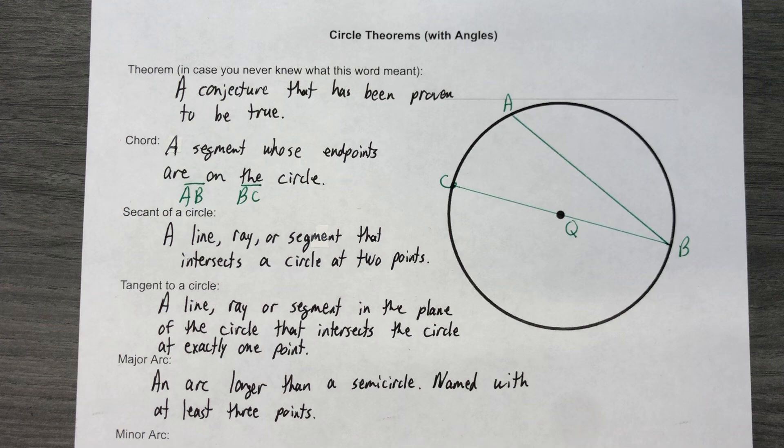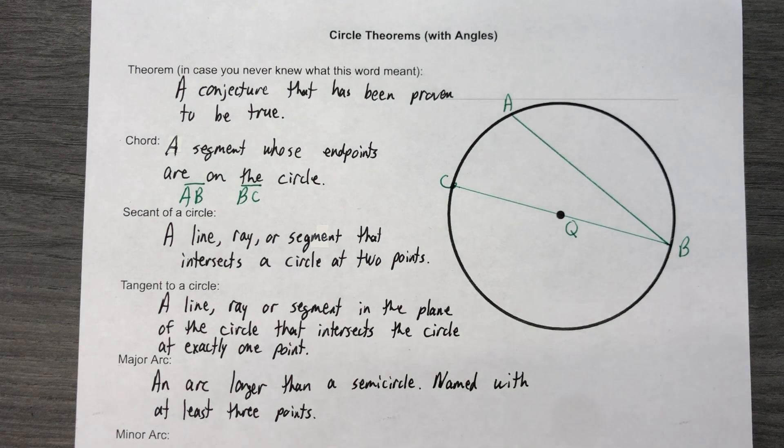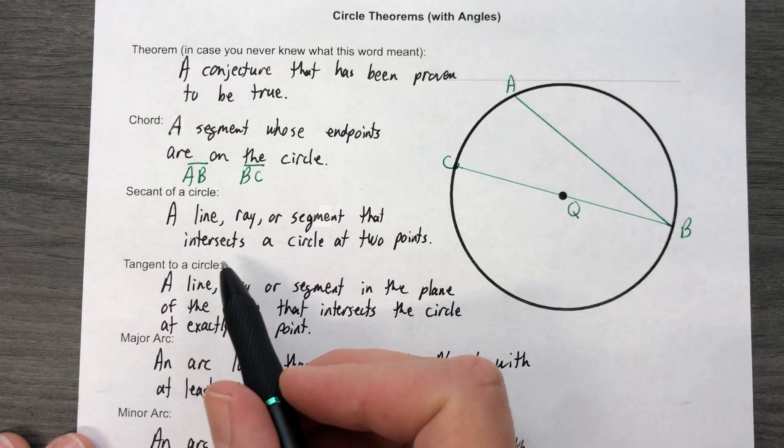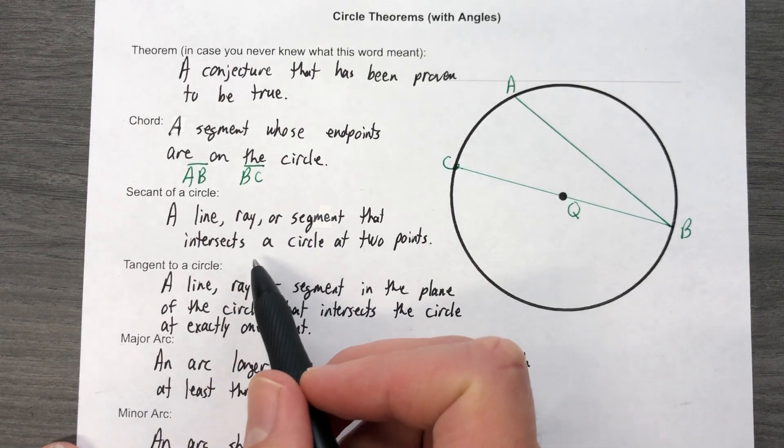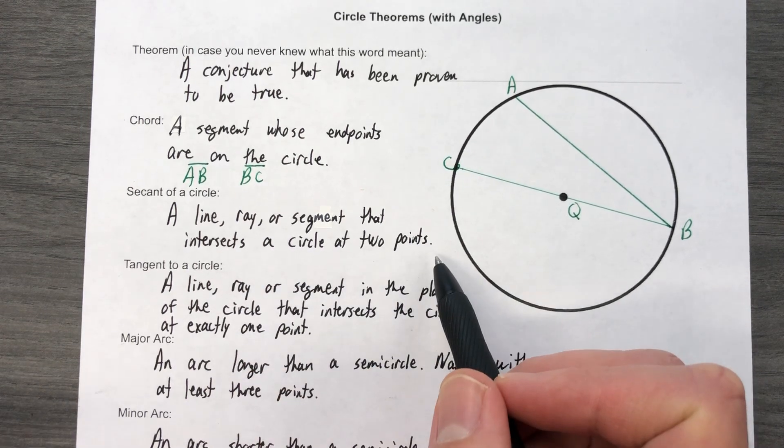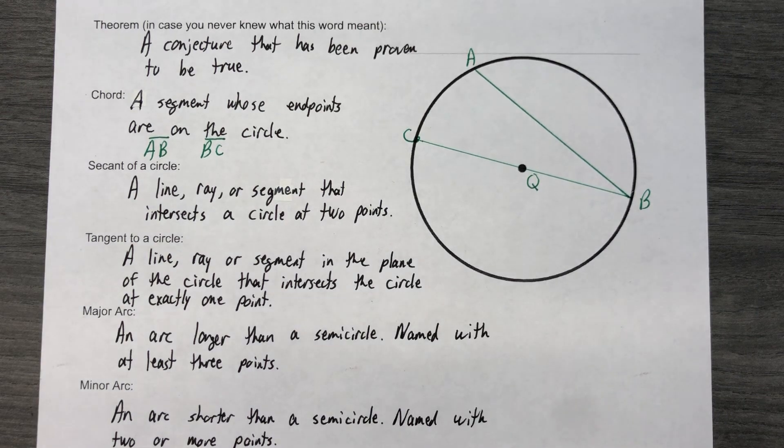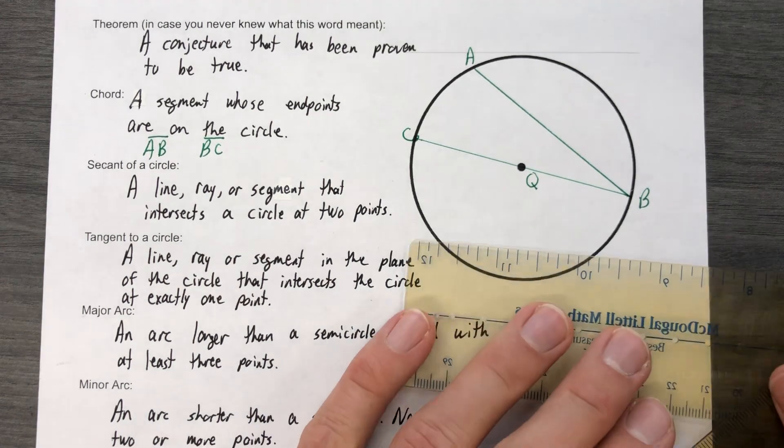Okay, the secant of a circle is a ray, a line, a segment that intersects a circle at two points. What's not in this definition but is strongly implied—I've got this definition out of a book—is that there's part of the line, ray, or segment that's gonna go outside the circle.